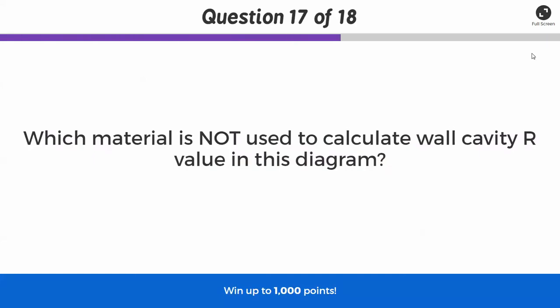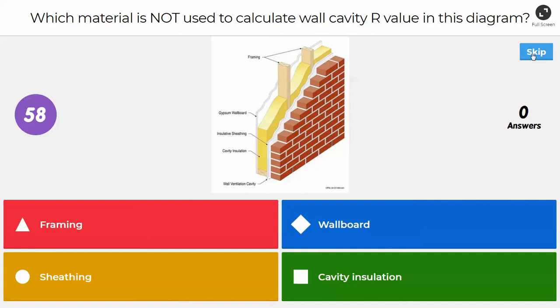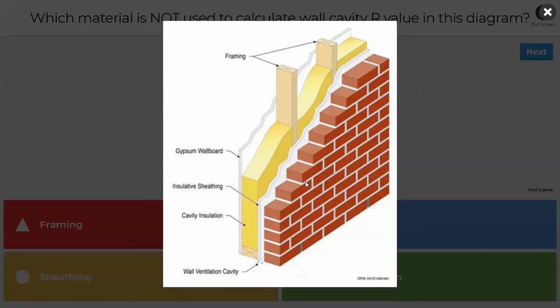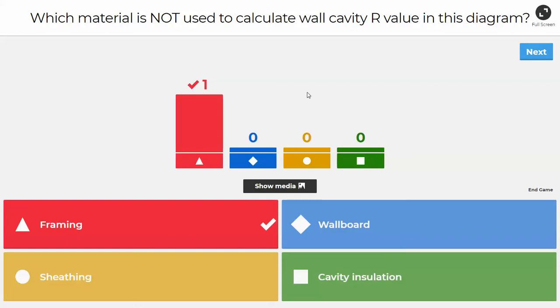All right, we've got two questions to go. Which material is not used to calculate cavity R-value, wall cavity R-value in this diagram? We'll give the answer at 40 seconds here. This shouldn't need too long for this. Is it the framing, is it the wallboard, the sheathing, or the cavity insulation? All right, so the correct answer there is the framing. So remember that when we're doing wall cavity, we're doing the space between the studs. So the framing would not be used in the calculation for wall cavity R-value. If we wanted the stud R-value, we would include that of the framing, but we would exclude the insulation.